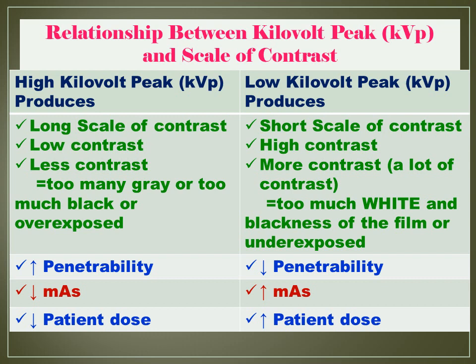Since high KVP results in an overexposed film and low KVP results in an underexposed film, we need to solve the problem. We apply the 15% rule — to change the KVP by 15% while changing the MAS by one half or double. This will be discussed next time.